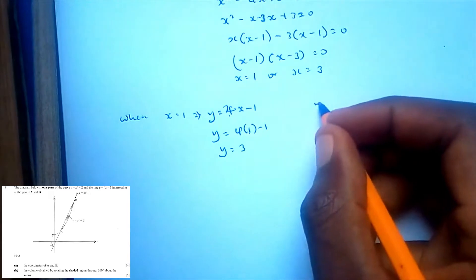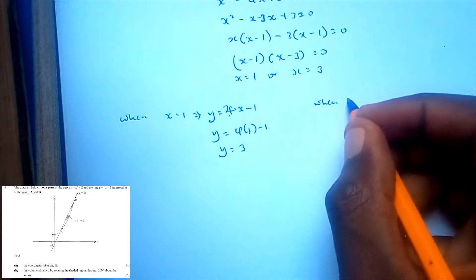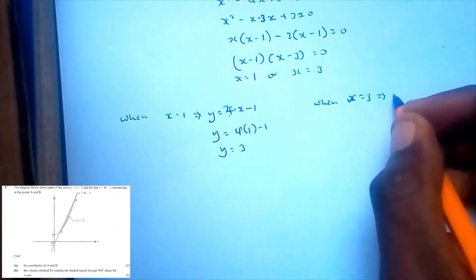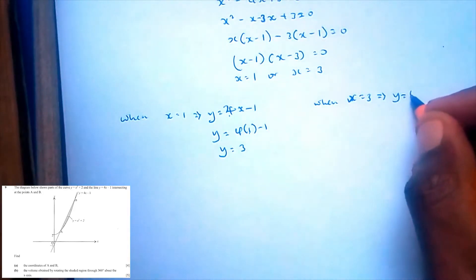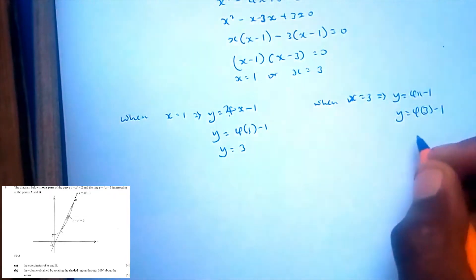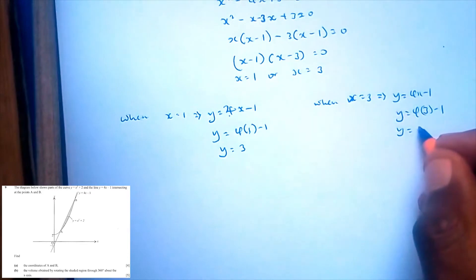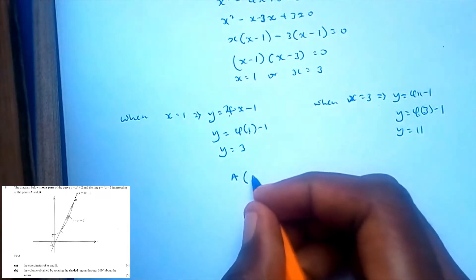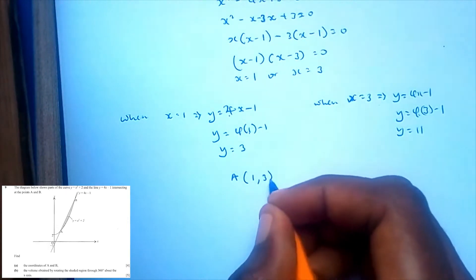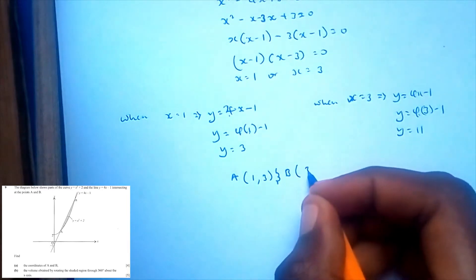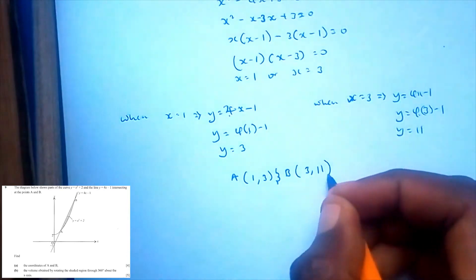Then when x is equal to 3, y will be equal to 4x minus 1. y is equal to 4 times 3 minus 1. y will be equal to 12 minus 1, which is 11. So point A is (1, 3) and point B is (3, 11). That is our question 1a.